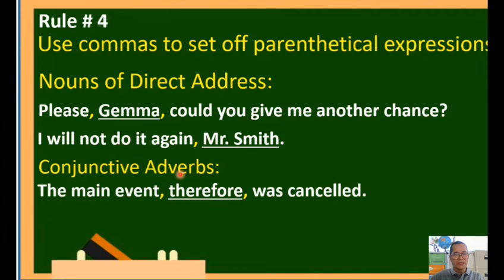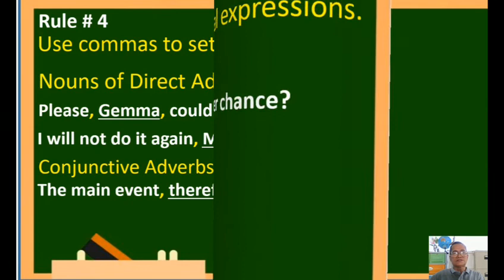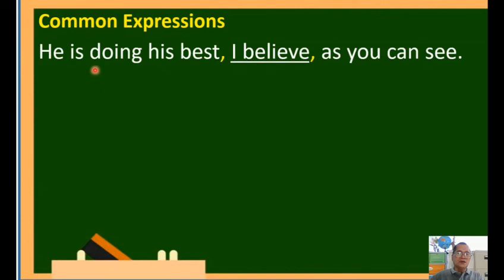For conjunctive adverbs: 'The main event, therefore, was cancelled.' The conjunctive adverb 'therefore' is inserted into the sentence, so place a comma before it, then 'therefore,' then another comma, then a space, then the continuation. For common expressions: 'He is doing his best, I believe, as you can see.' The phrase 'I believe' is inserted, so place commas on both sides — comma, space, 'I believe,' comma, space, then the continuation of the sentence.